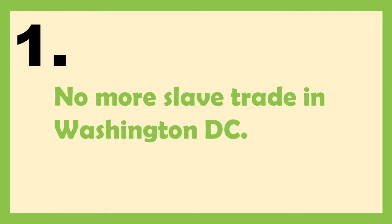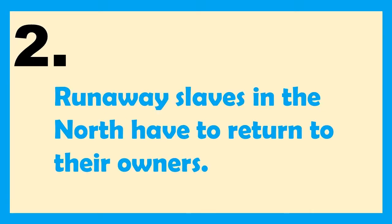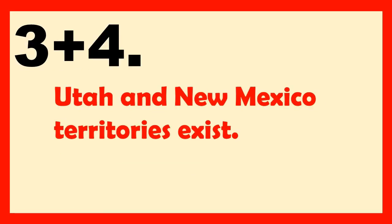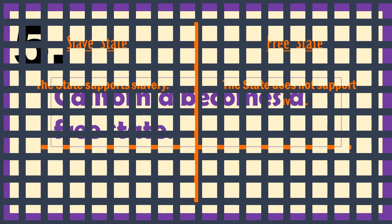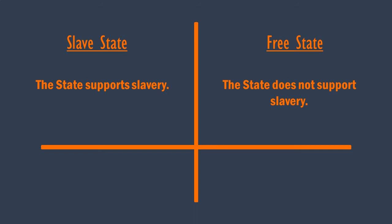Now we jump into 1850, where the Compromise of 1850 was enacted. This executed five laws. It abolished the slave trade in Washington, D.C., which one would think to be a benefit for the North, but was actually pushed by the South because it would make finding runaway slaves easier. The compromise also enforced the Fugitive Slave Law, which stated that runaway slaves had to be returned to their owners even if they made it to a free state. But in return, the Utah and New Mexico territories were created and given the power to decide for themselves whether they wanted to be slave or free, and California was admitted to the Union as a free state. A slave state is a territory or region of land that is supporting slavery, and a free state or territory is one that didn't.